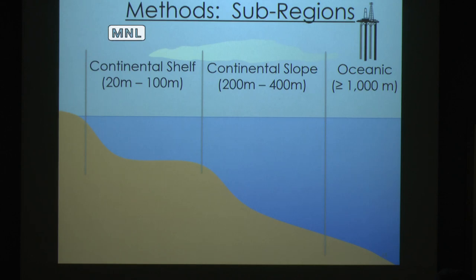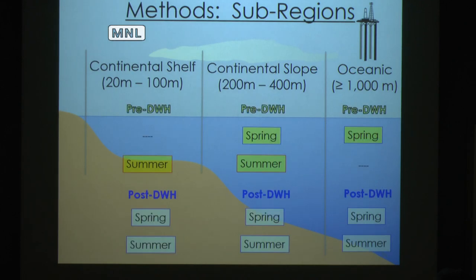Going back to those sub-regions — the data represented in each: as you can see in blue, all these sub-regions were sampled and we have samples for the post-spill. However, we have some gaps in the data where the continental shelf is missing spring and oceanic is missing summer. Just something to keep in mind.